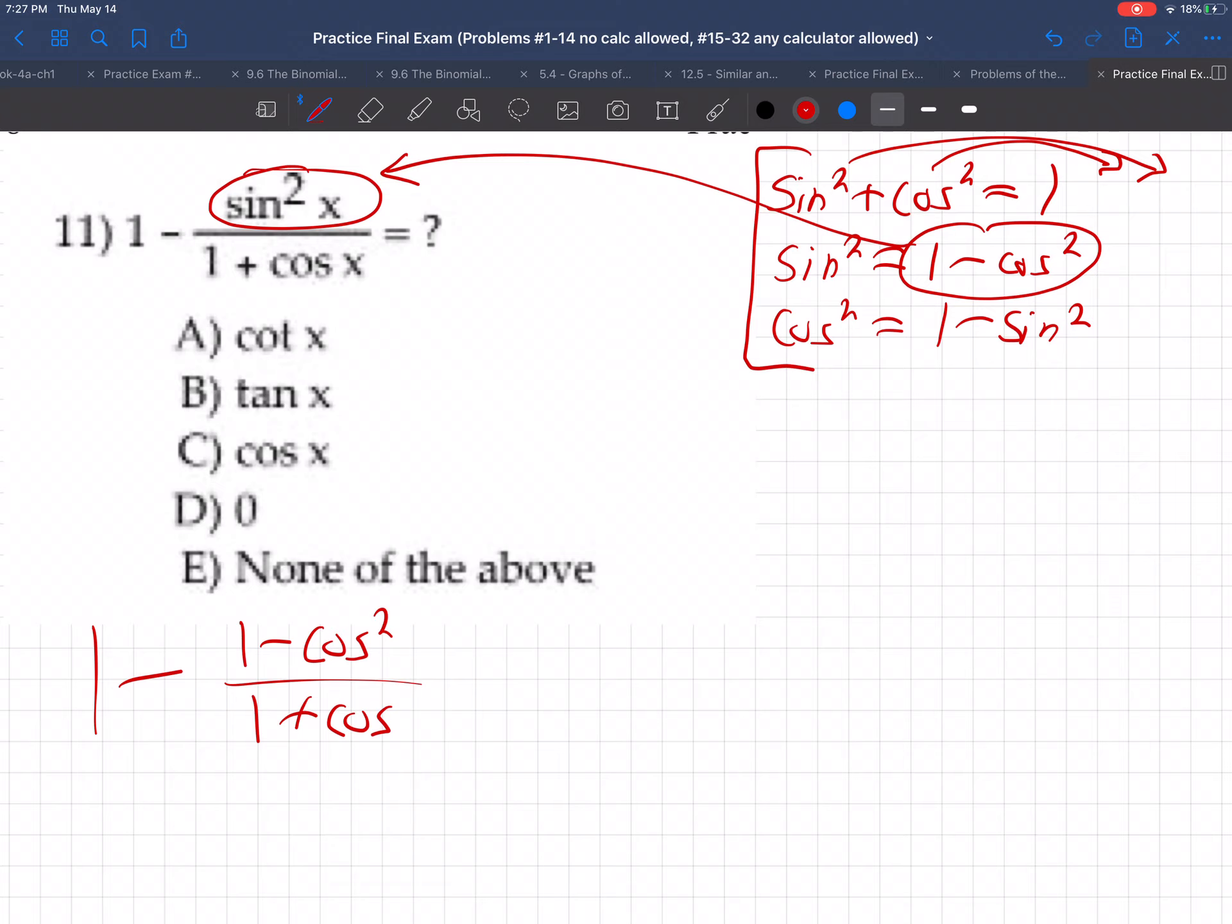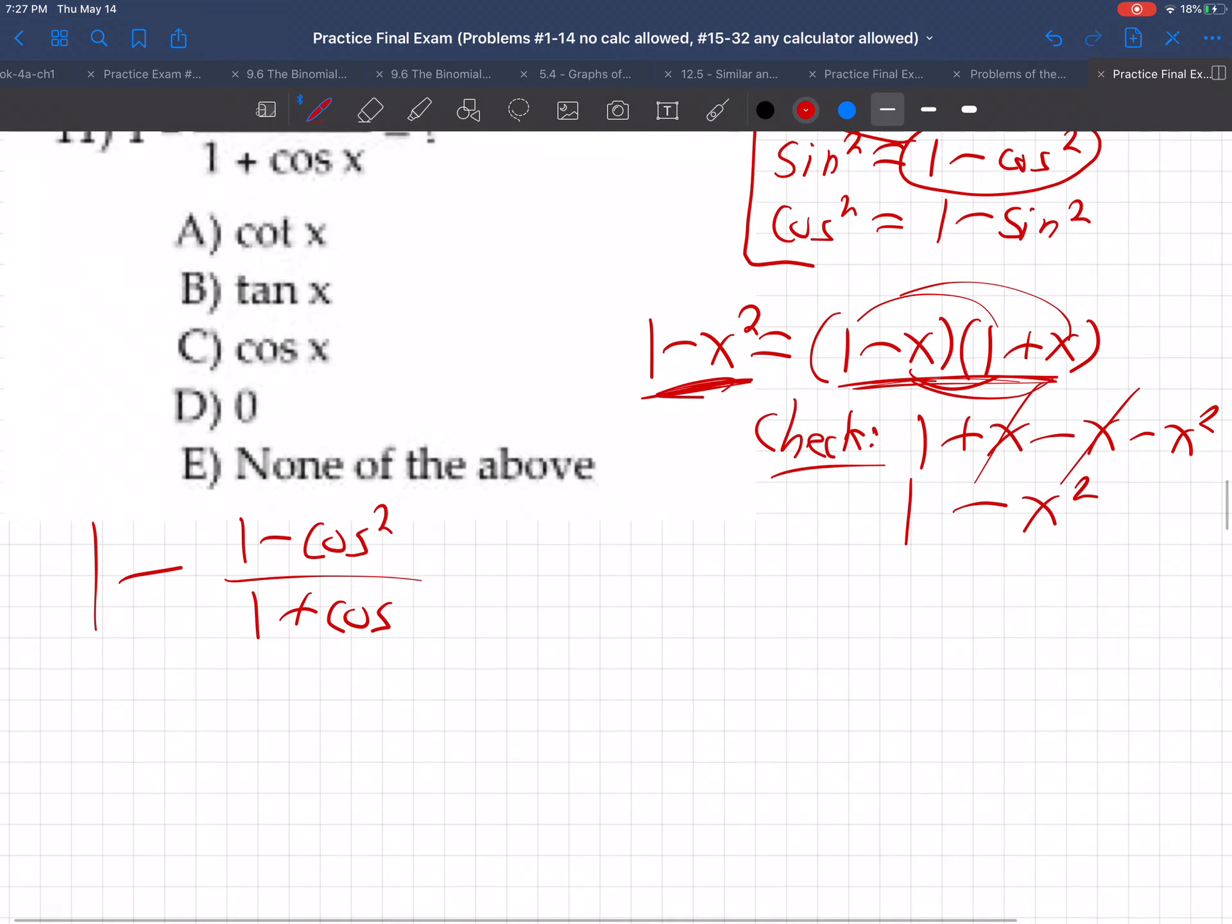Well, now you've also got to remember how to factor something like 1 minus x squared. Remember it's 1 minus x, 1 plus x? You can check it right here. Let me just prove it's true. If I FOIL this out, I'd get 1 plus x minus x minus x squared. These cancel, and it'd be 1 minus x squared. So 1 minus x squared is the same as this.